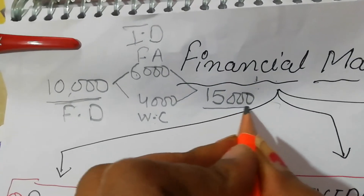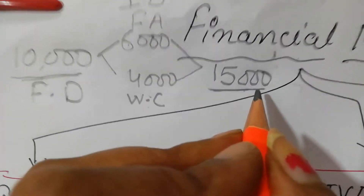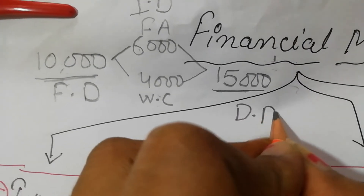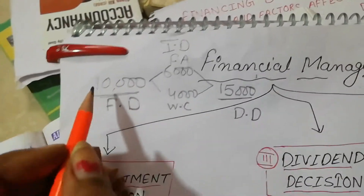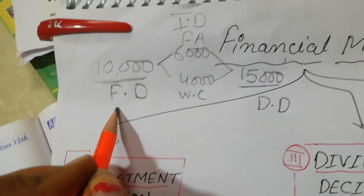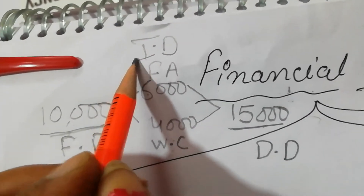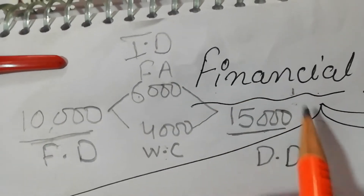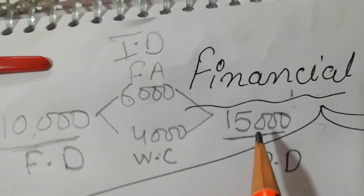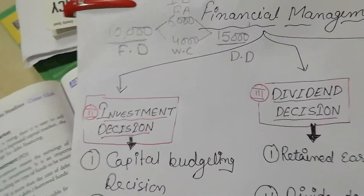Then, the 15,000 — what will you decide? This is the dividend decision. So: where the money came from is known as the financing decision; where you invested it is known as the investment decision; and what you do with your profit — how much dividend to declare — is known as the dividend decision. These are the three decisions.